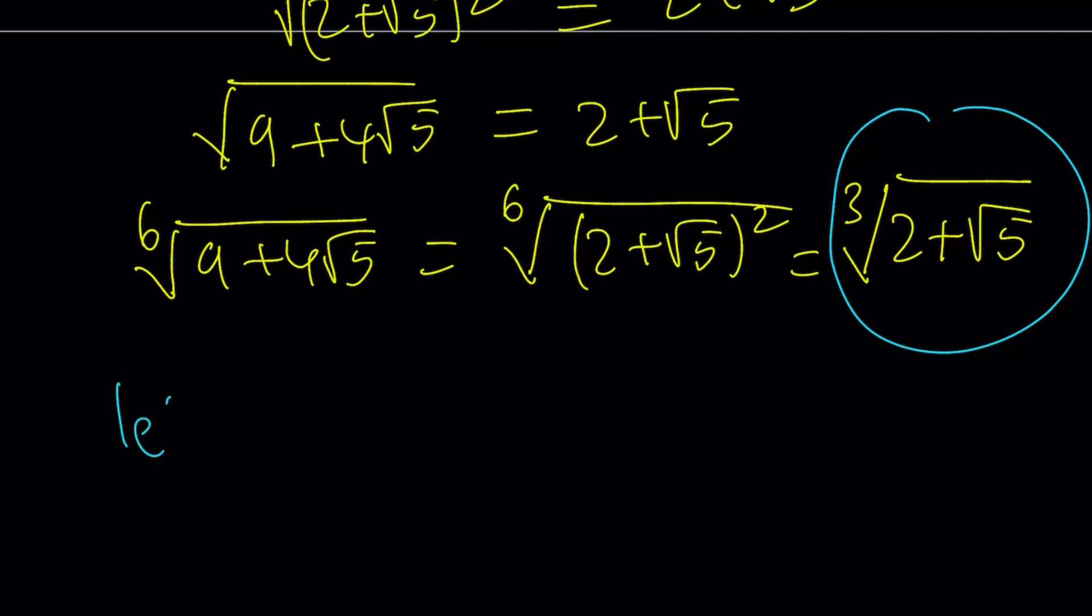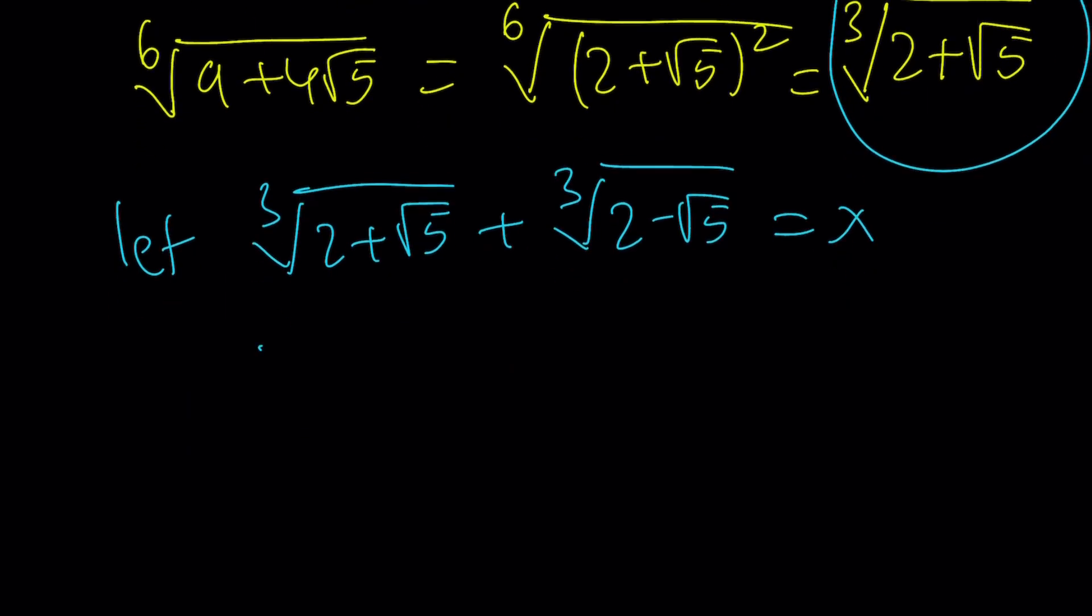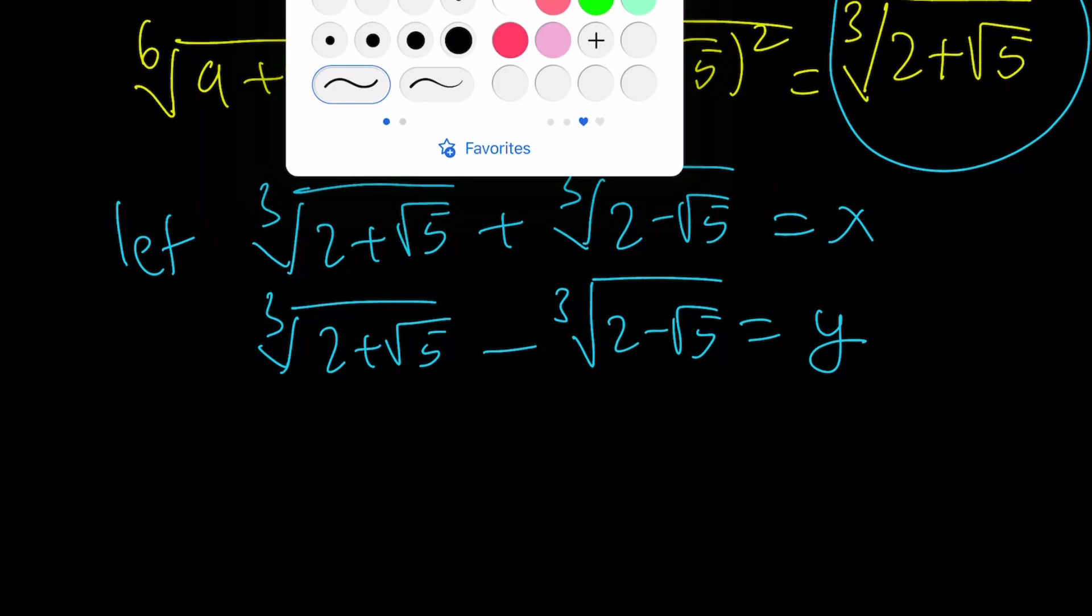Let the cube root of 2 plus root 5 plus the cube root of 2 minus root 5 equal x, and let cube root of 2 plus root 5 minus the cube root of 2 minus root 5 equal y. From here, we're going to cube both sides for each equation, solve for x and y, we'll get cubics, we'll take care of them. And each cubic is kind of interesting to solve, so I think this will be good exercise.